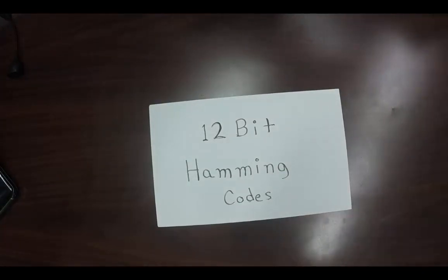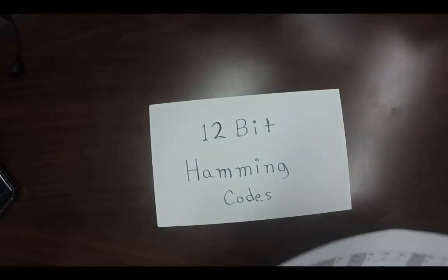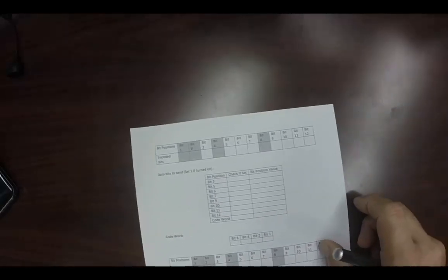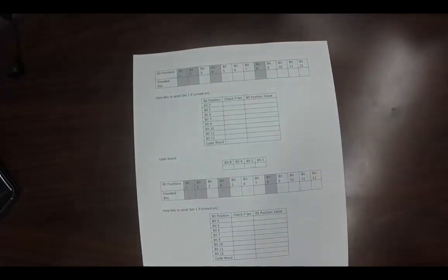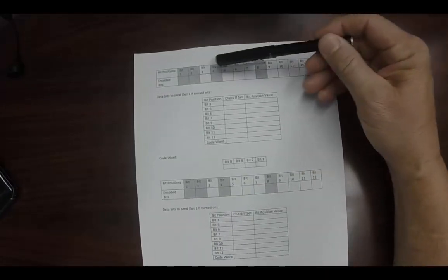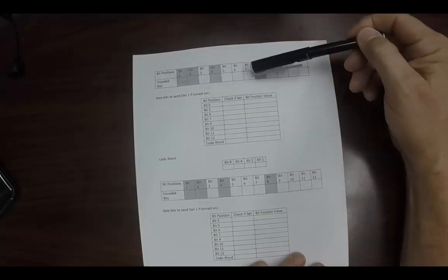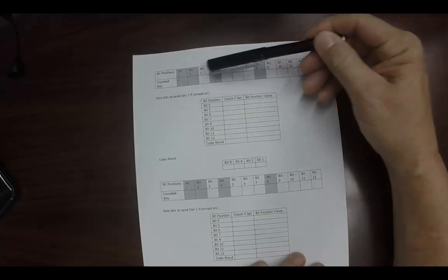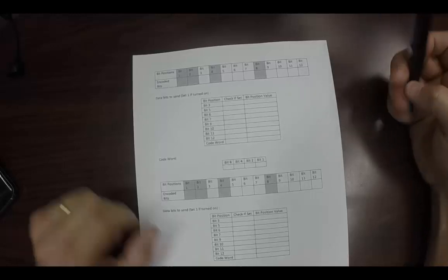They can be in any size. The reason we do 12-bits is because in the 12-bit Hamming code, and I'll put the sheet right there so you can see it, it allows you to send an 8-bit byte, and then 4 of the bits are actually used for check bits or parity bits. So I'll show you how it goes.